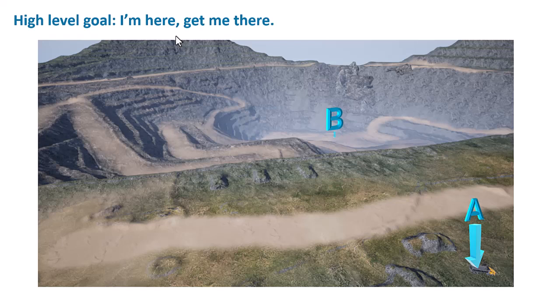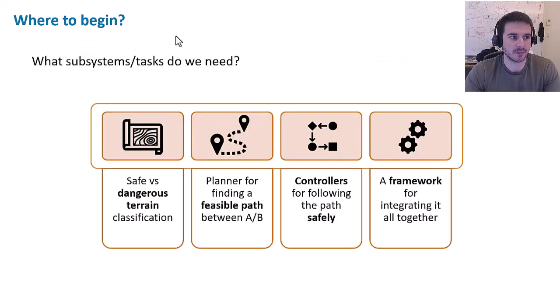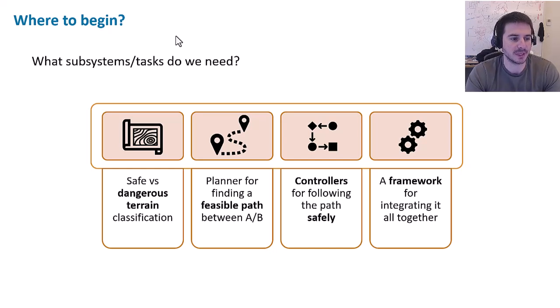At a high level, what we're trying to do is pretty simple: we're trying to get from point A to point B. You've recently loaded up your haul truck or dropped off, and now you need to go to the counterpart destination. As you can see, that path might not be simple — it's not a straight line. So what subsystems and tasks do we need? In the reference application we constructed, we broke this down into four pieces.